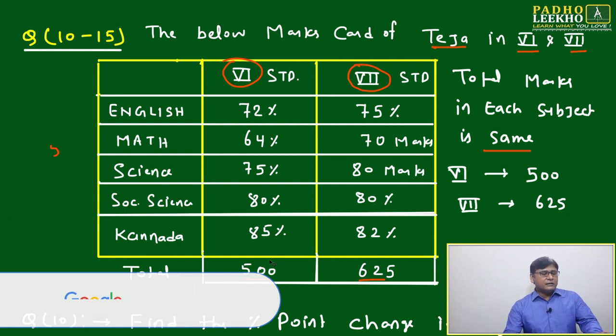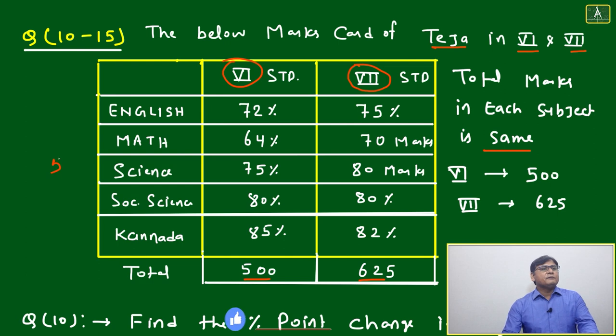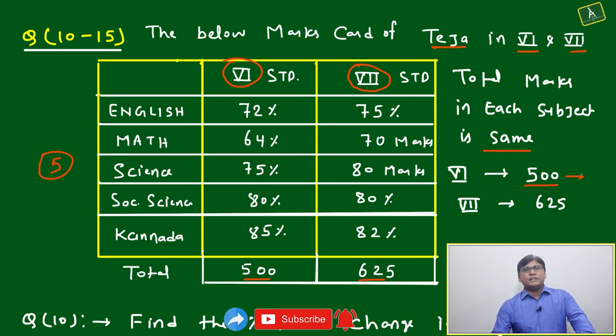In 6th standard, if the total is 500, then each subject will be 100 marks. Each will be 100. And here in 7th standard, each will be 125. Correct?